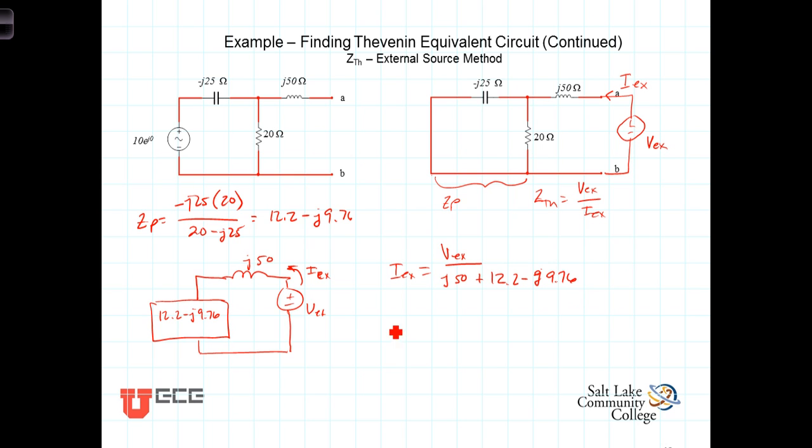And the ratio VEX over IEX can be gotten by multiplying both sides of the equation by this denominator and dividing both sides by IEX. We get that VEX over IEX is equal to 12.2 plus J40.2, and that is our Thevenin equivalent impedance.